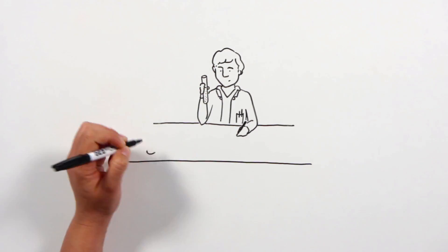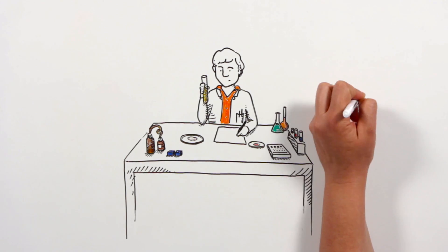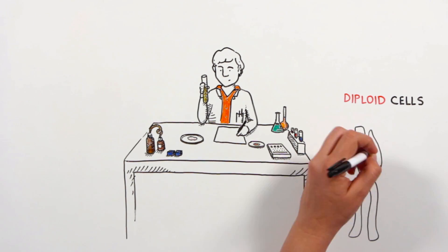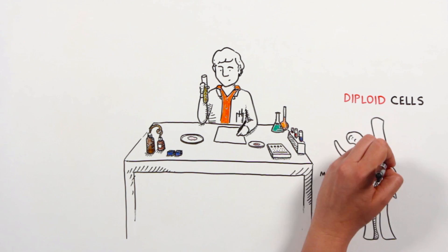A huge advantage of haploid human cells is that it is much easier to edit their genes. In diploid cells, detecting the biological effects of a single copy mutation is difficult, because the other copy is normal and serves as backup.